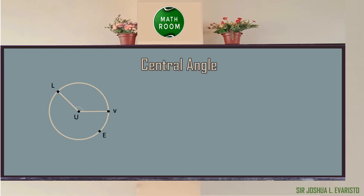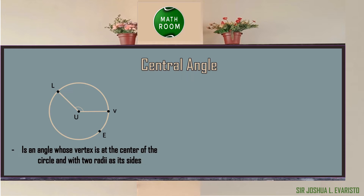Let us now move on to the central angle. It is an angle whose vertex is at the center of the circle and with two radii as its sides. In the given circle U, the central angle is angle LUV, where it divides the circle into arcs.